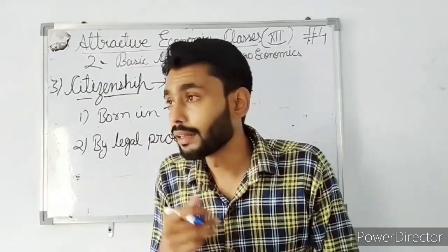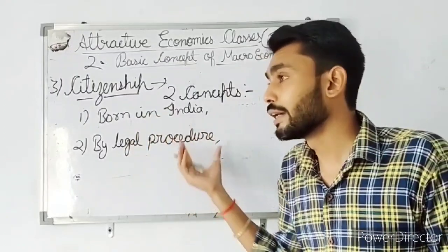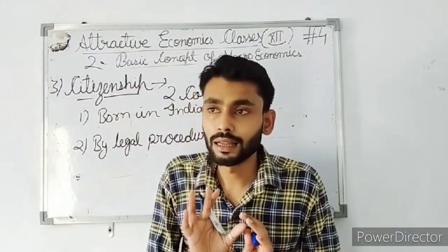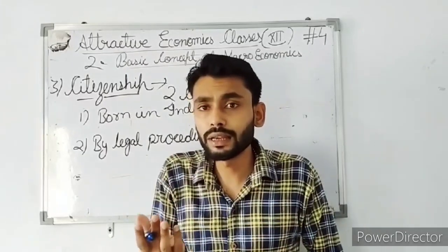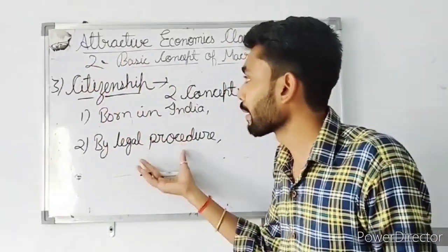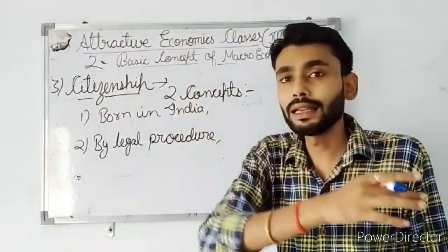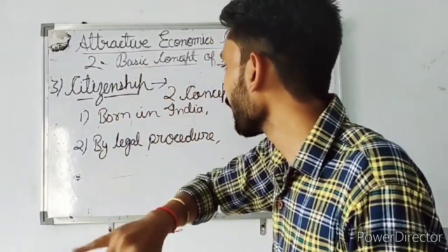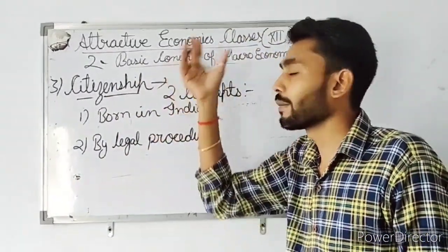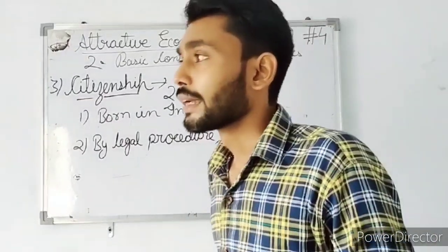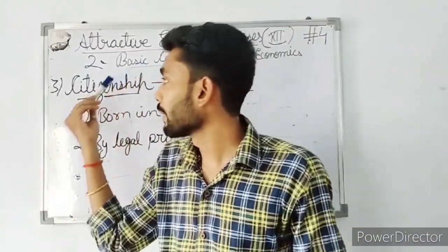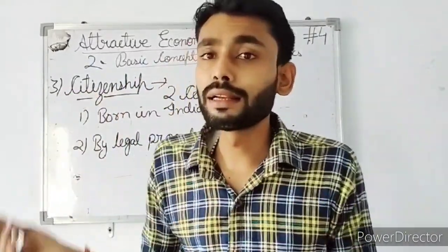So we have three topics complete. First is domestic territory, next is normal resident, and third is citizenship. I hope that all three topics are understood. These are foundational concepts for national income.